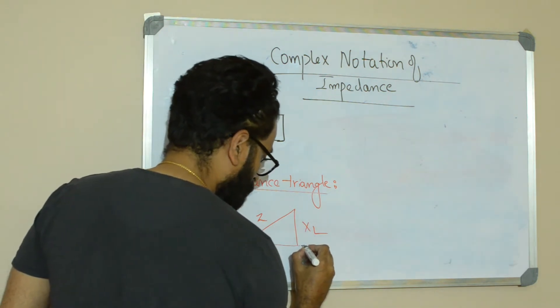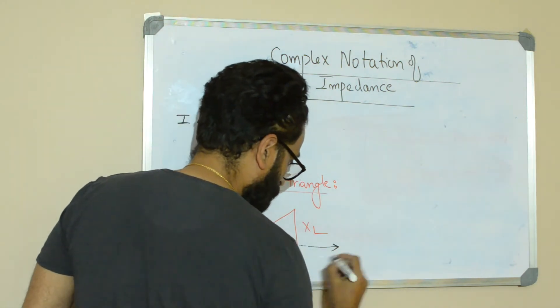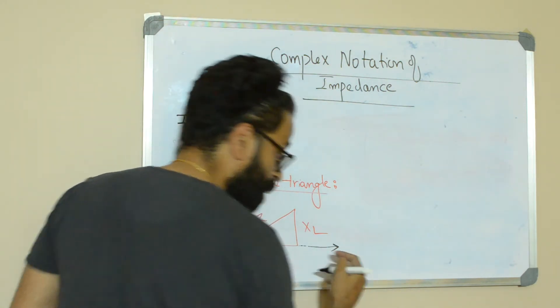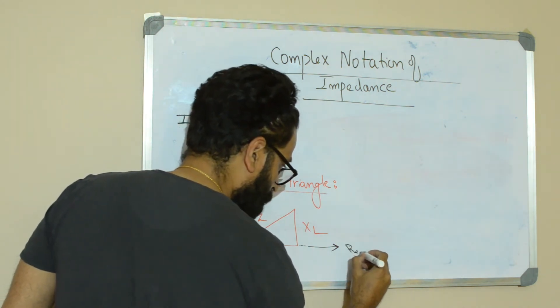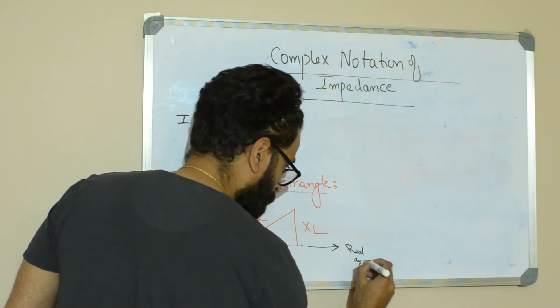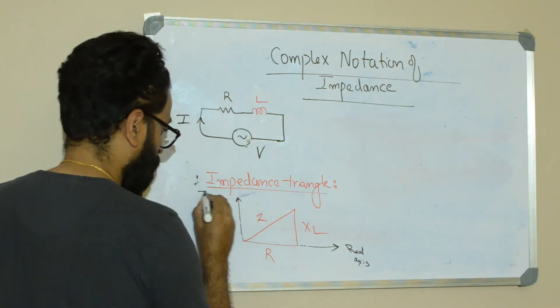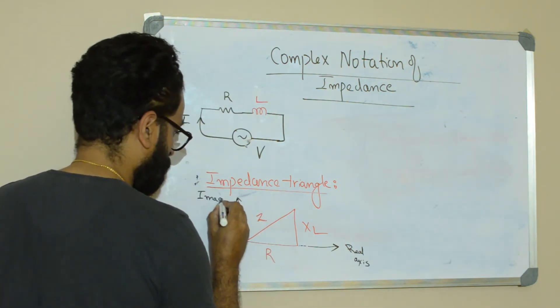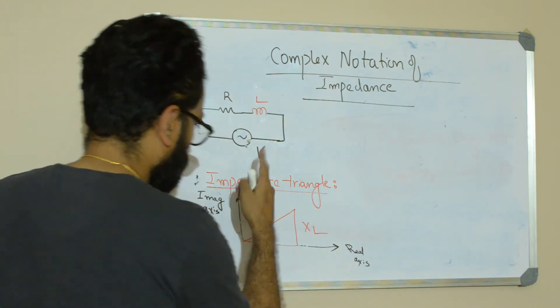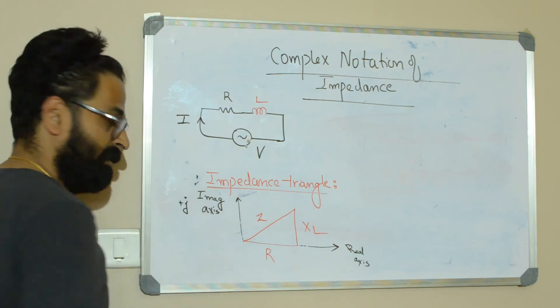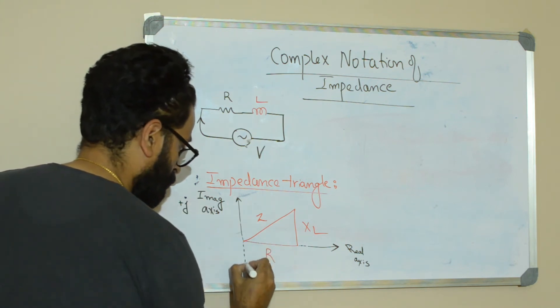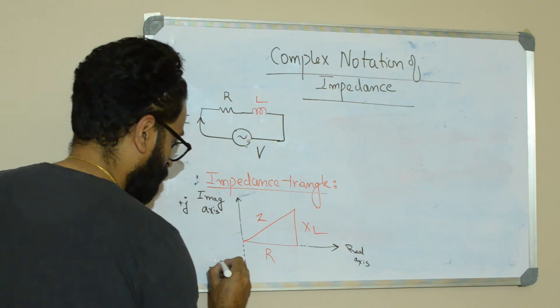We'll draw a complex plane, a two-dimensional plane: real axis and imaginary axis. So upside is positive j axis and in the downward direction it is negative j axis.